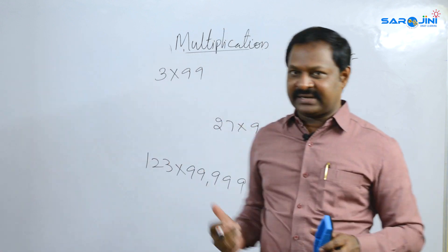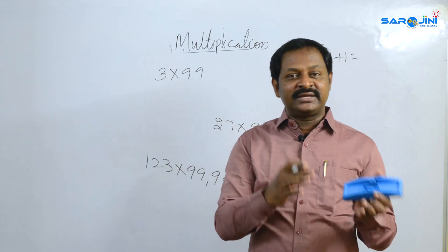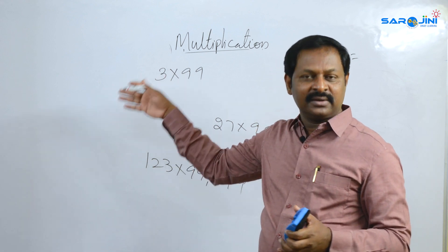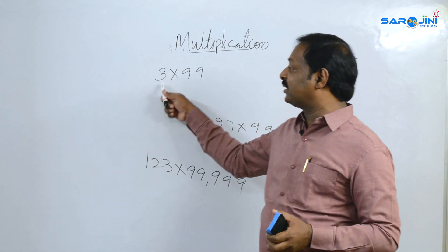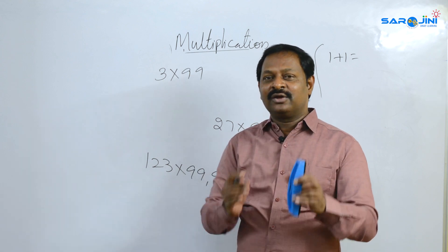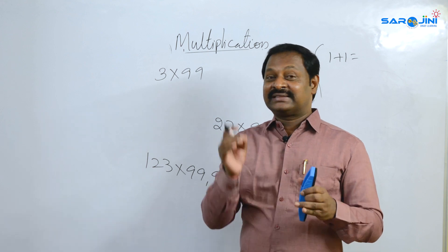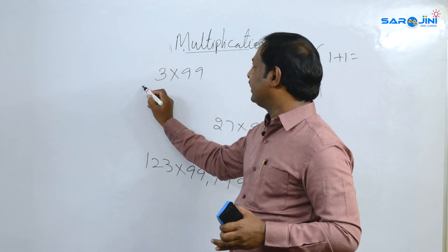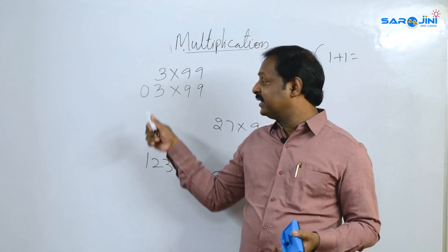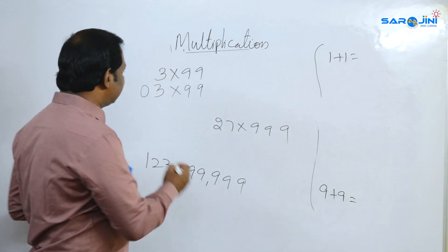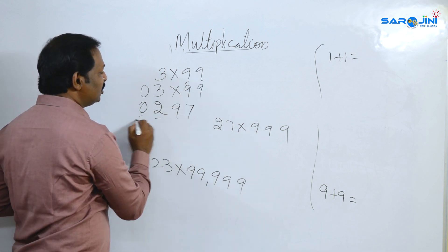Multiplicant is 1 digit and multiplier also has one 9. 2 digits is 2 nines, 3 digits is 3 nines, 4 digits is 4 nines. But if multiplicant has fewer digits than the multiplier — for example 3 into 99 — you pad with a leading zero: 03. One less than 03 is 02, so the first part is 0, 2. Then 0 plus 9 equals 9, and 2 plus 7 equals 9. Your answer is 2, 9, 7 — that is 297.